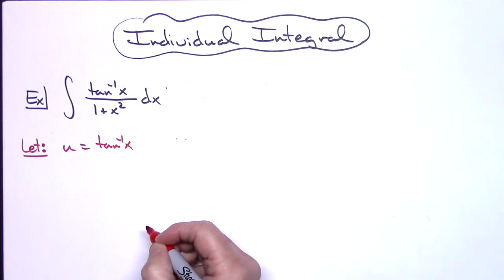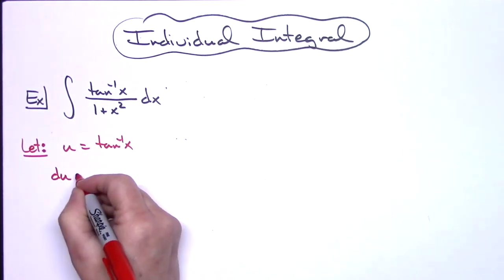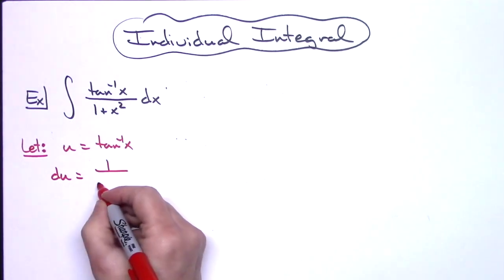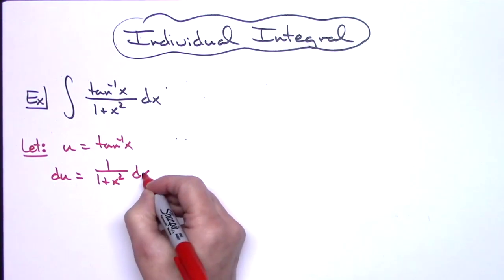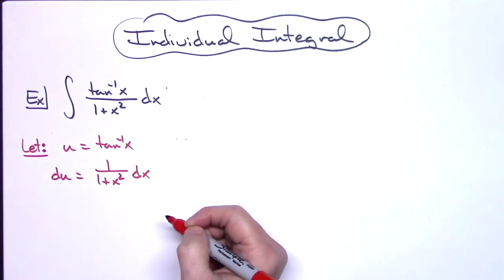When I take the derivative of both sides I'll have du equals 1 over 1 plus x squared dx. You definitely have to have that derivative memorized there.